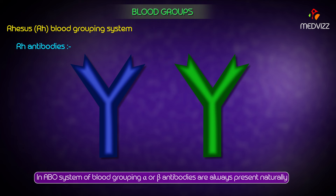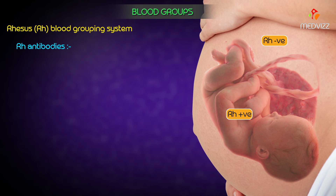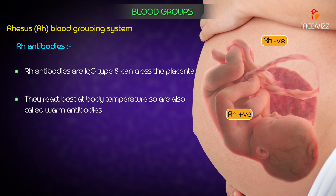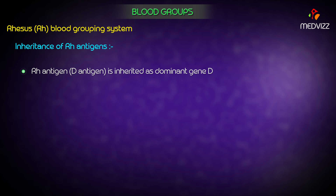Unlike the ABO system, there are no natural antibodies to Rh antigens. Rh antibodies, also called anti-D antibodies, are produced only when an Rh negative individual is transfused with Rh positive blood, or when an Rh negative mother gives birth to an Rh positive baby. Rh antibodies are IgG type, can cross the placenta, and since they react best at body temperature, are called warm antibodies. Once produced, they persist in the blood for years.